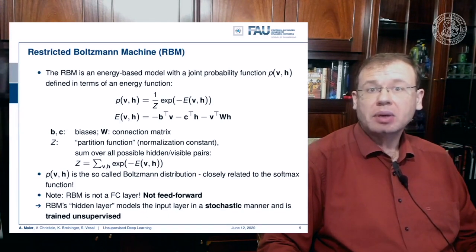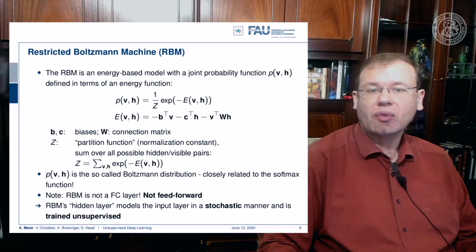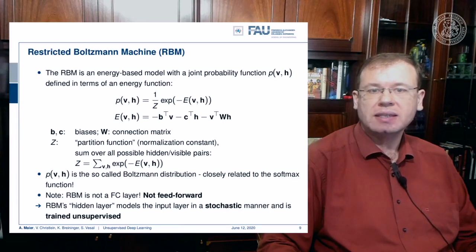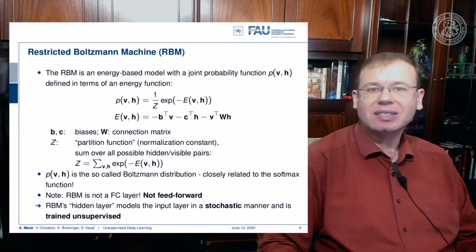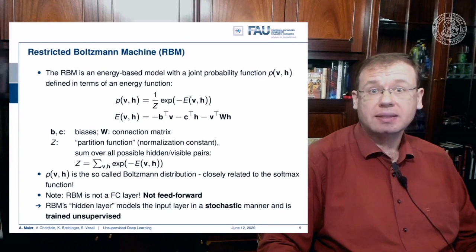This probability density function is called the Boltzmann distribution and is closely related to the softmax function. Remember this is not simply a fully connected layer because it's not feedforward. You feed into the restricted Boltzmann machine, determine the hidden states H, and from H you can then sample Vs again. The hidden layer models the input layer in a stochastic manner and is trained unsupervised.